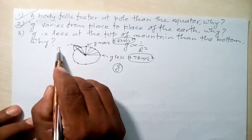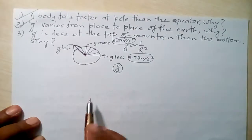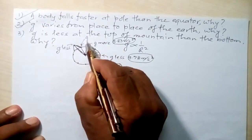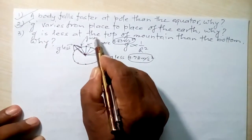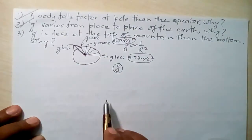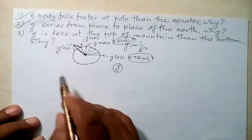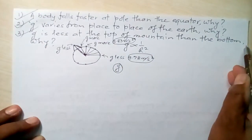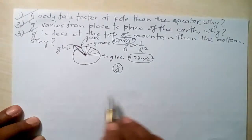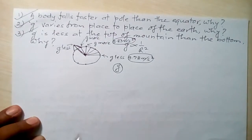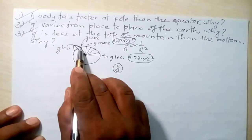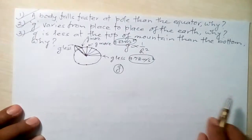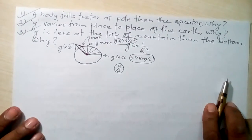Since the radius is less at the bottom of the mountain, g will be comparatively more at the bottom than at the top. So the answer is: g is less at the top of the mountain because the radius is more at the top, and g is more at the bottom because the radius is less there, since g is inversely proportional to the square of the radius of the Earth.